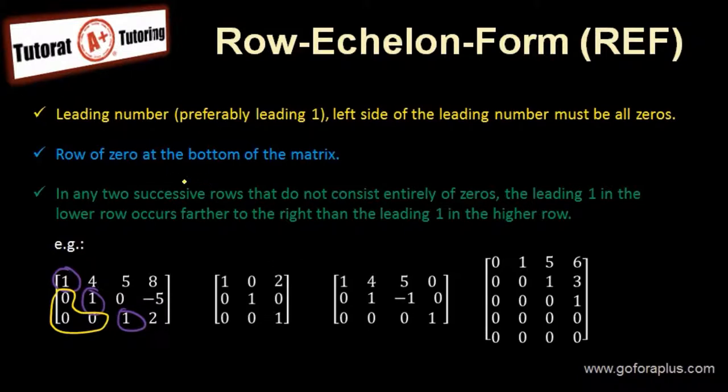Now the second point is row of zero at the bottom of the matrix. What does it mean? If we look at the last example here, we see that two rows of zero are at the bottom of the matrix. So if you have a row of zero, put it at the bottom of your matrix.